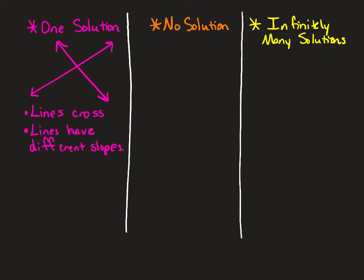If there's one solution, the lines will have different slopes. Notice these two lines — one has a positive slope and one has a negative slope, so they're definitely different slopes. They could both be positive or both negative in different examples and still cross at some point. Here you see an example: y equals x plus 4 and y equals negative x plus 6. The slopes are positive 1 and negative 1, so they have different slopes.